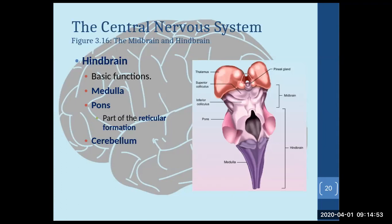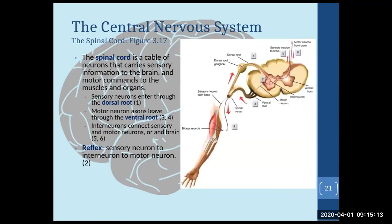So that's the hindbrain. The three parts of the brain are the forebrain — basically the cerebral cortex and the subcortical structures — the midbrain, which is the little area right below the thalamus, and then the hindbrain: medulla, pons, and cerebellum.